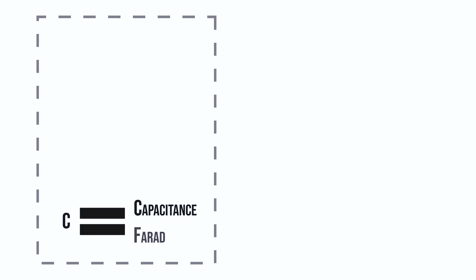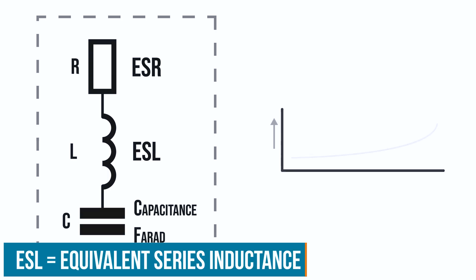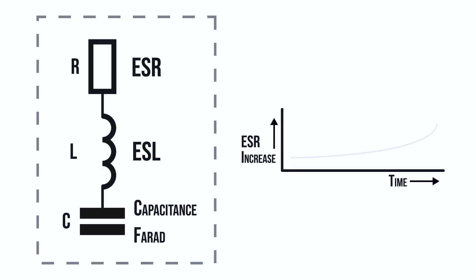You probably already know that a capacitor has a capacitance and is measured in farads. Capacitors also have an equivalent inductance and equivalent resistance associated with them. These parasitics get called ESL and ESR because they are in series with the capacitive element. For some types of capacitors, like electrolytic capacitors, ESR can indicate the condition of the capacitor. As it nears its end of life, the ESR will go up.